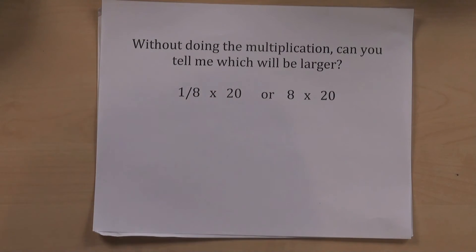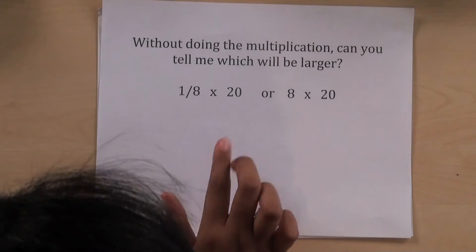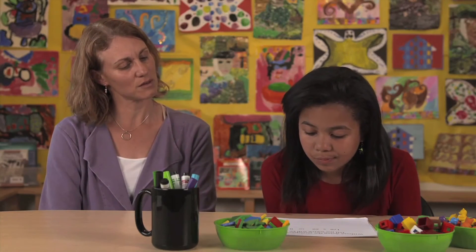When you multiply these two numbers together, the number will be less than 20. And what about 8 times 20? Would that be greater than 20 or less than 20? Greater than 20.